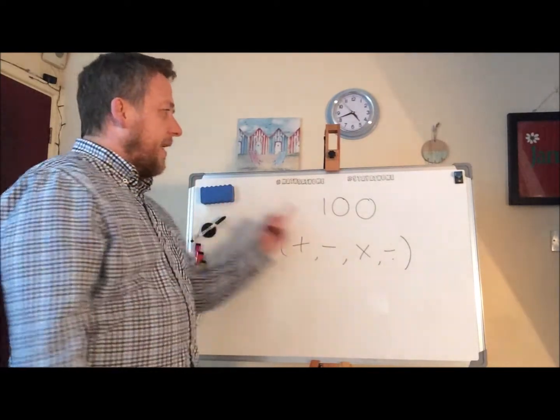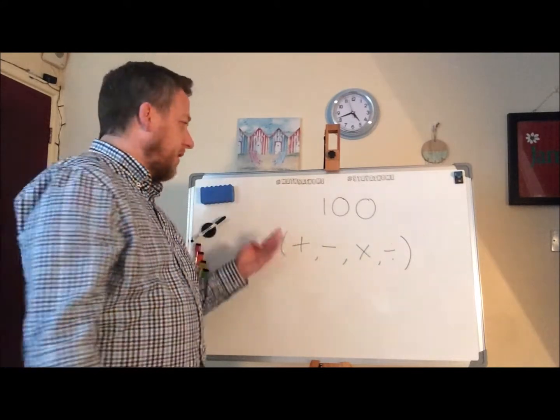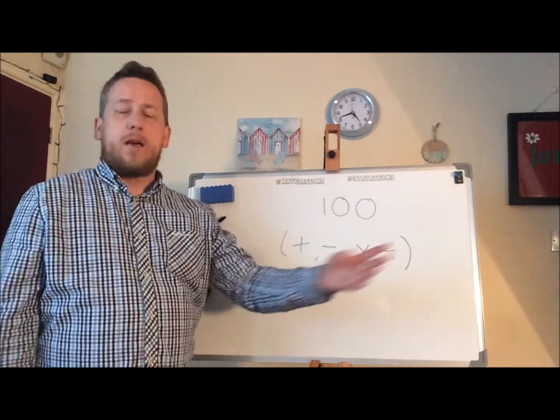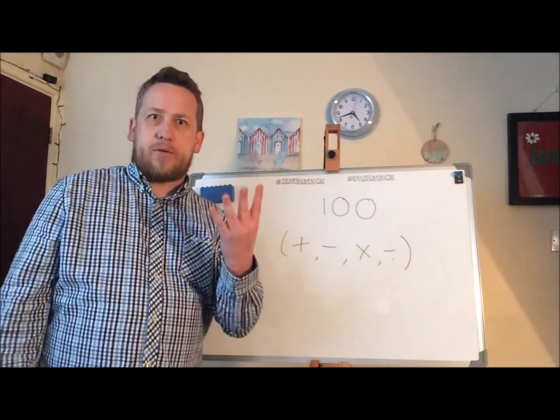For example, if I was trying to make 100 with just the number 4, I could do 4 times 4 times 4, add 4, take away 4, as many times as I wanted to, but only using the number 4.